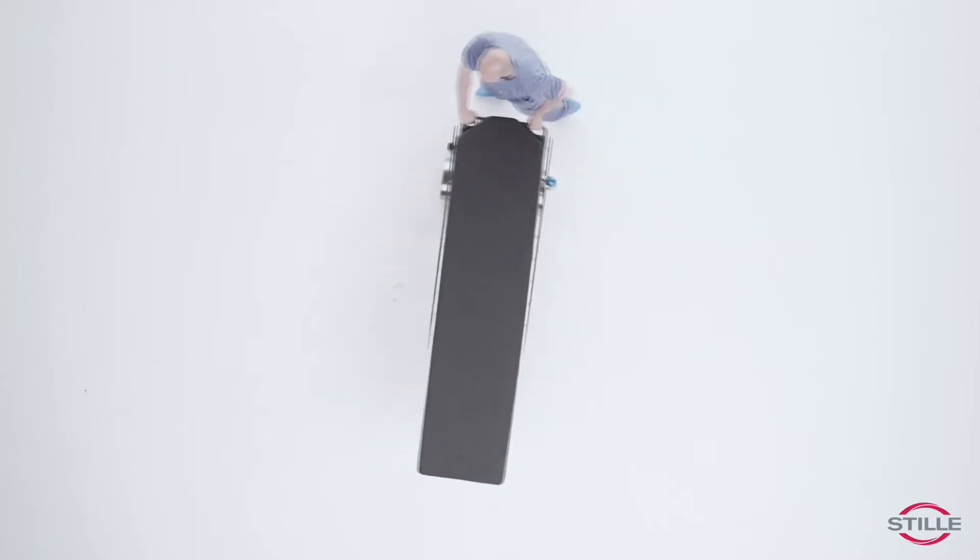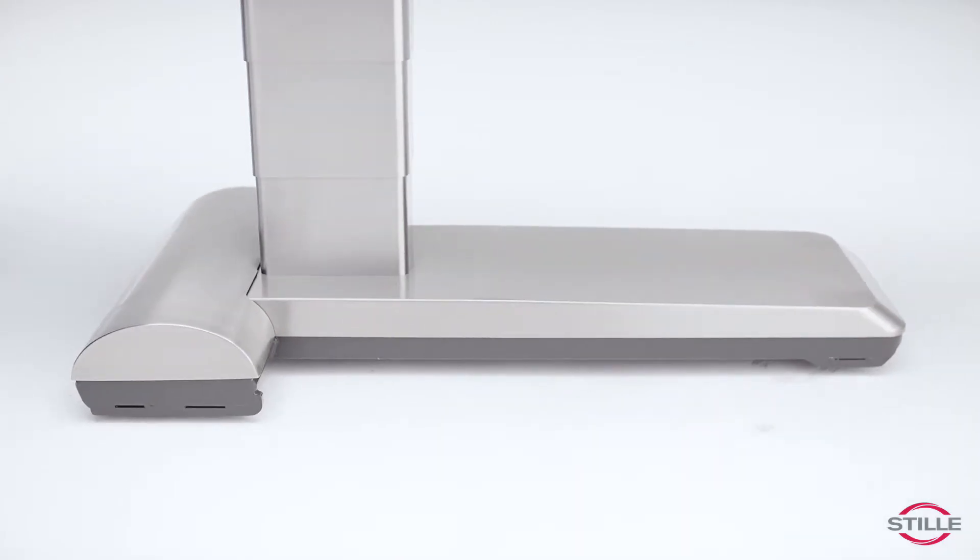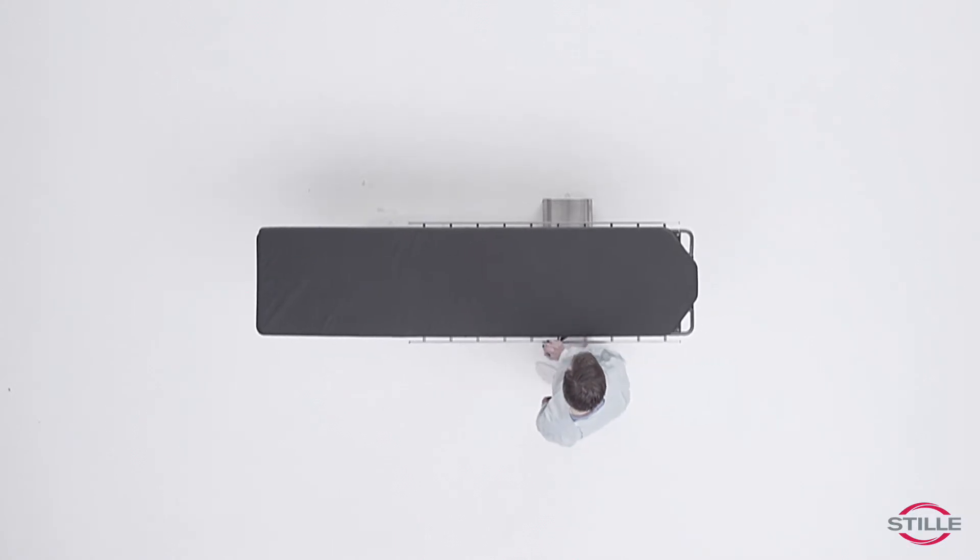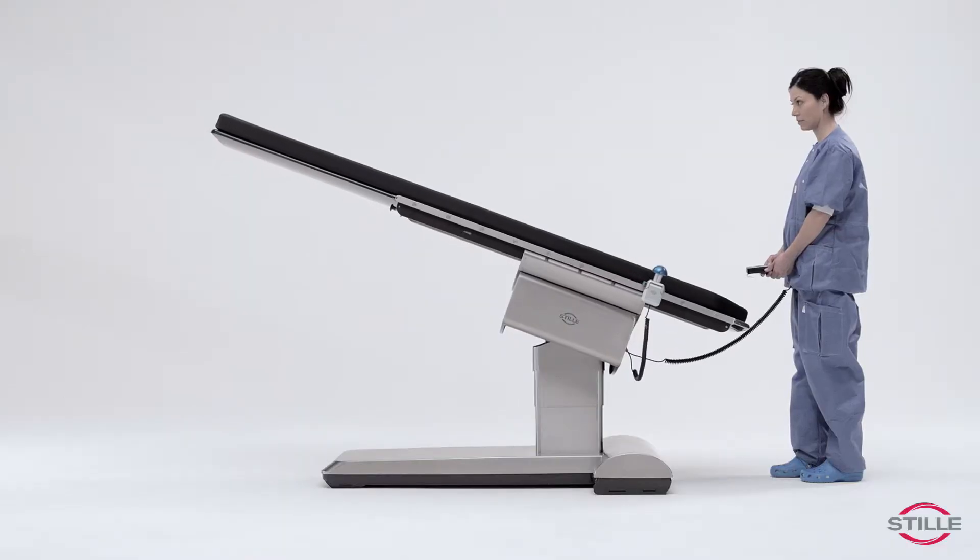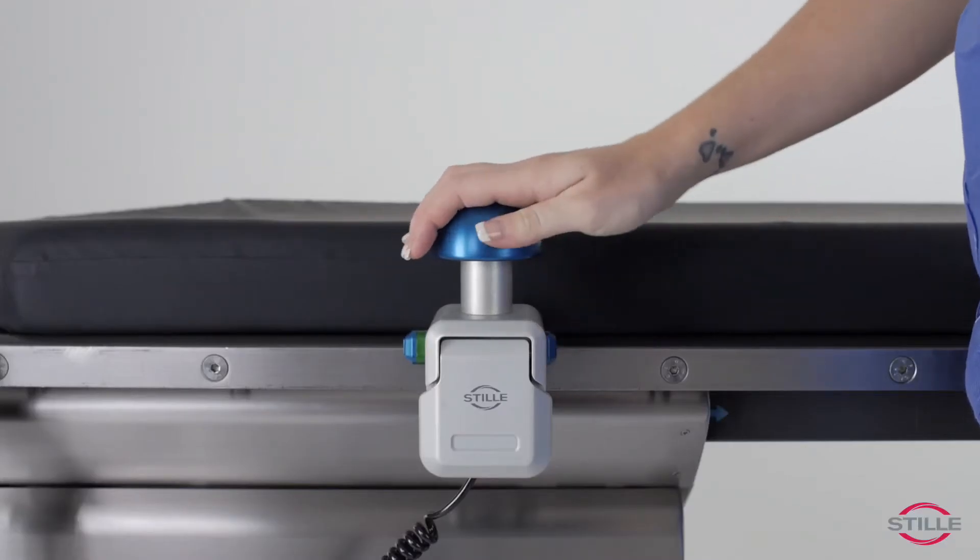The eMagic 2 is a mobile operation table with a free floating tabletop. All functions are maneuvered by the hand control or the pan handle.